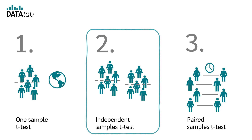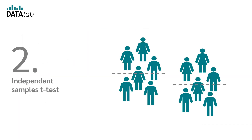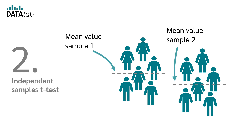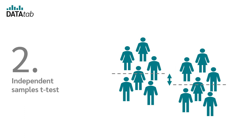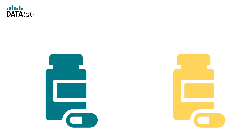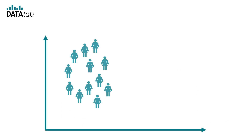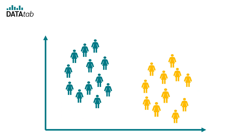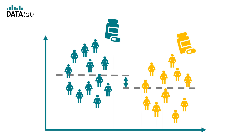When do we use the independent samples t-test? We use the t-test for independent samples when we want to compare the means of two independent groups or samples, and we want to know if there is a significant difference between these means. For example, we would like to compare the effectiveness of two painkillers. We randomly divide 60 people into two groups — the first group receives drug A and the second group receives drug B. Using an independent t-test, we can test whether there is a significant difference in pain relief between the two drugs.